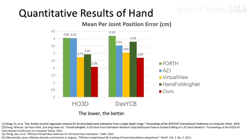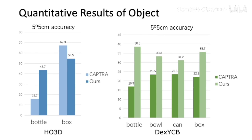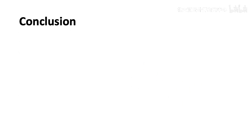Here are some quantitative results. Compared to the state-of-the-art point cloud-based pose estimation network HandFoldingNet, depth-based networks Virtual View and A2J, and an optimization-based hand tracking method, we achieve the lowest mean per-joint position error on both HO3D and DEXYCB datasets. Compared to the state-of-the-art point cloud-based object pose tracking method CAPTRA, we achieve higher 5-degree 5-centimeter accuracy on both datasets.